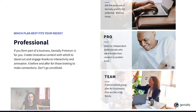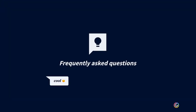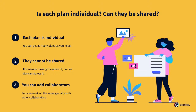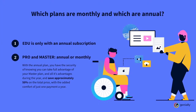It's your time. Let's move on to the frequently asked questions that we get from you regarding our premium plans. Is each plan individual? Can they be shared? Each plan is individual, and they cannot be shared. If there's one person working on an account, no one else can access it. However, you can work on the same Genially with your collaborators. Which plans are monthly and which are annual? The edu and student plans are only available with an annual subscription, not monthly.